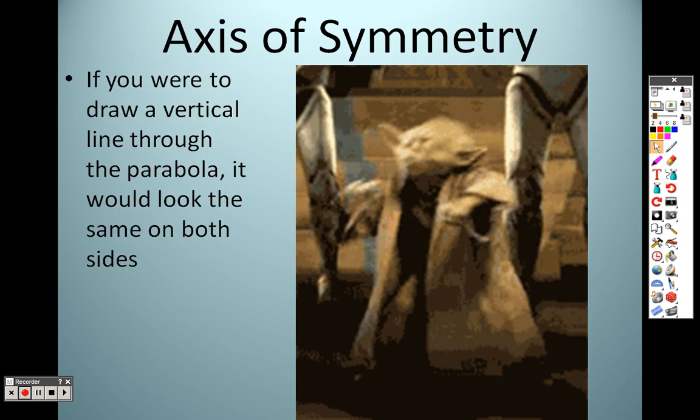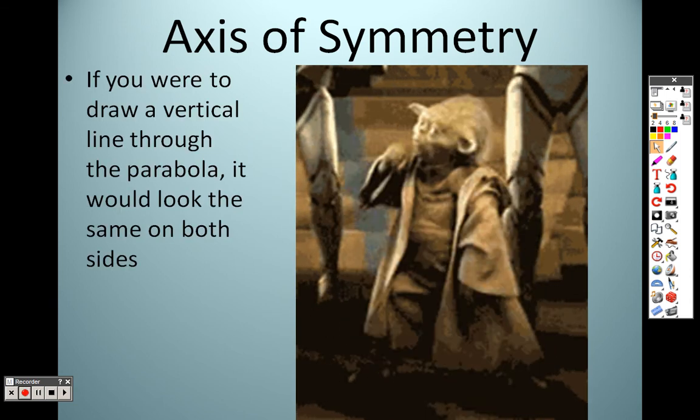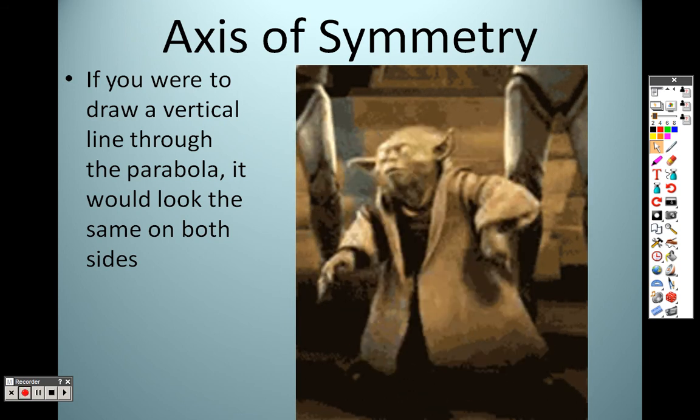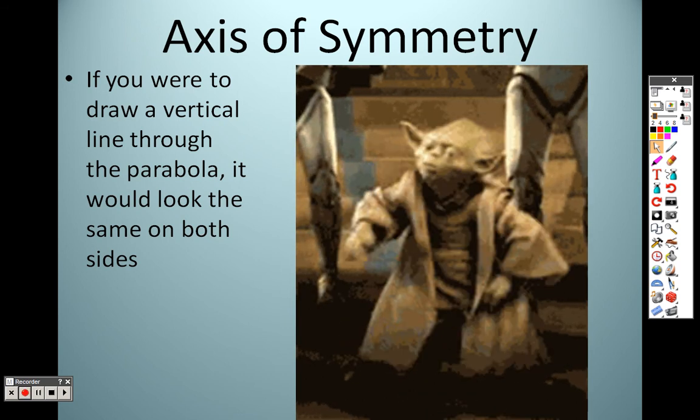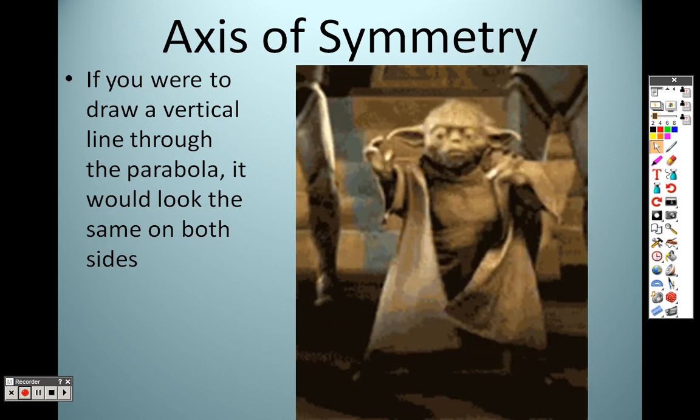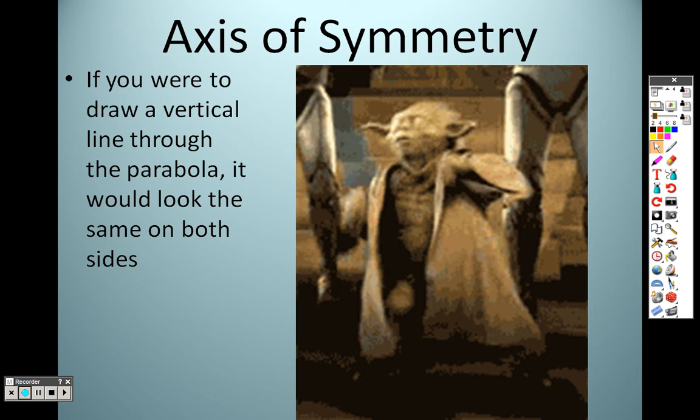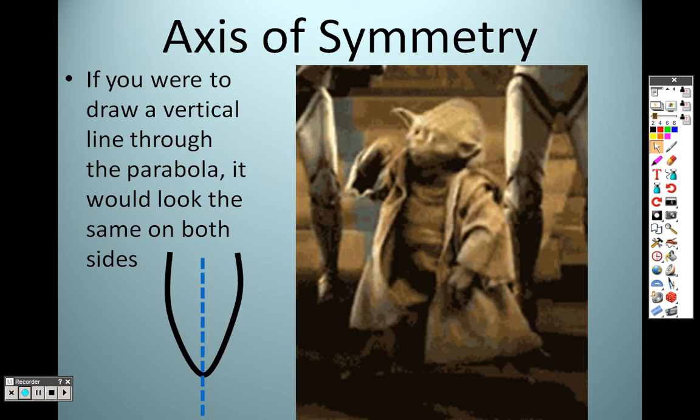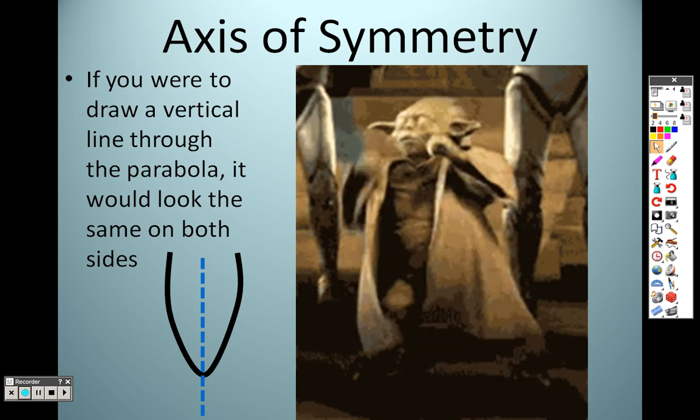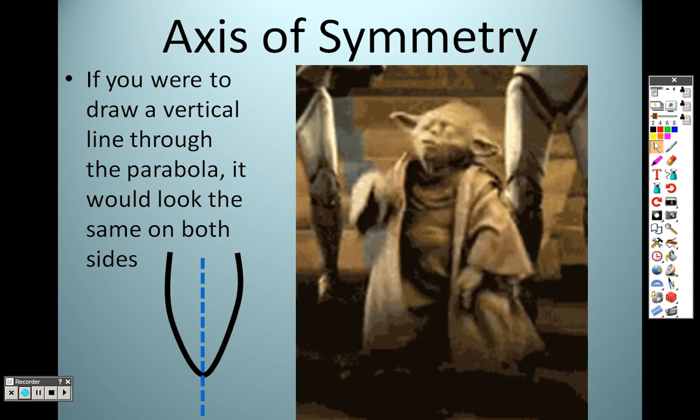The axis of symmetry. If you were to draw a vertical line through the parabola, it would look the same on both sides. So basically, right through that vertex point, if you draw a line straight down, you could have a mirror image of it on the other side. So it looks like that, right? Draw that, that's the axis of symmetry, it's through the vertex point, it's a mirror image. The same exact thing on both sides.